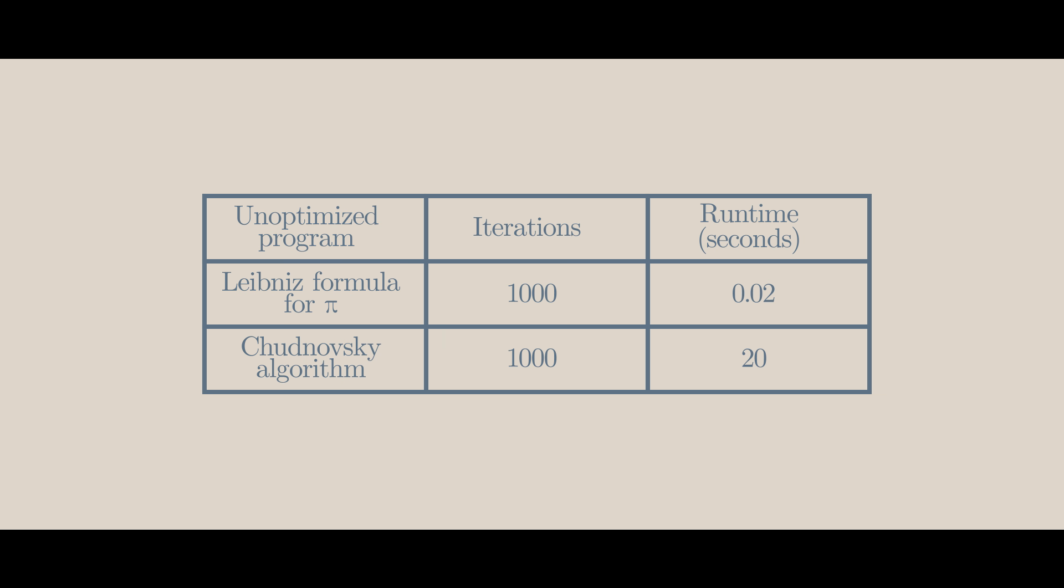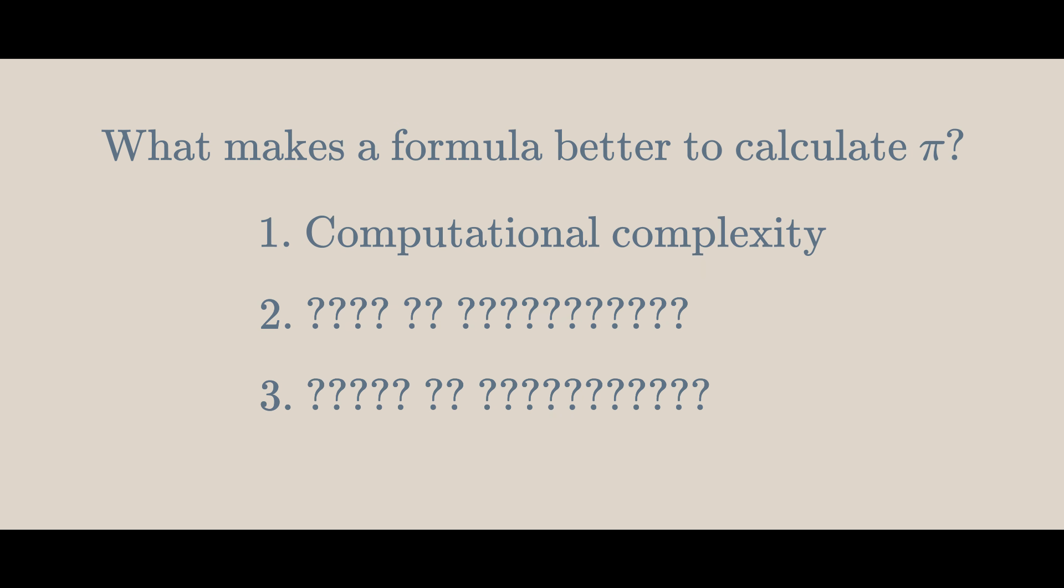Let's look at how accurate these approximations were. The Leibniz formula for pi only gave three correct digits until it got one wrong, but the Chudnovsky algorithm gave 14,182 correct digits. This brings me onto the next thing, the rate of convergence of an algorithm.